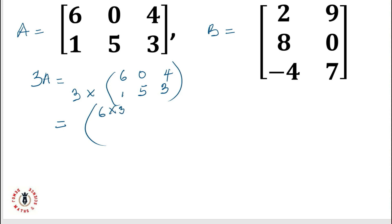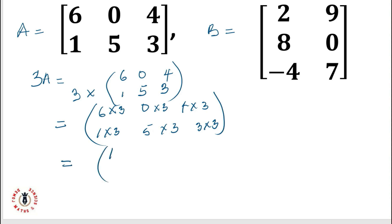That is, it becomes 6 times 3, then 1 times 3, 0 times 3, 4 times 3, 5 times 3, and lastly 3 times 3. This gives us: 18, 3, 0, 12, 15, and 9. So the multiplication of 3 by A leads to this new matrix.